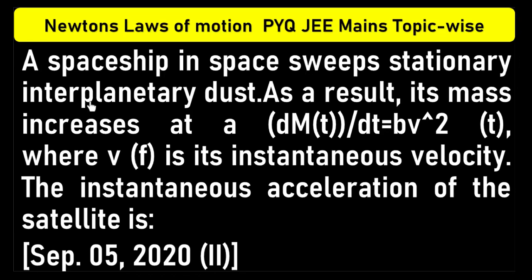A spaceship in space sweeps stationary interplanetary dust. As a result, its mass increases at a rate where dm by dt is equal to bv squared, where v of t - it should be v of t - its instantaneous velocity.